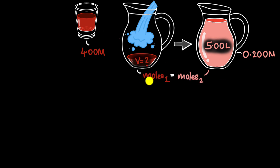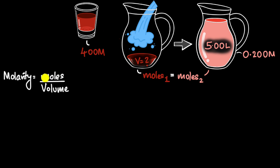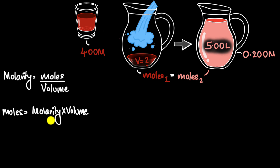The moles of sugar in the concentrated solution must equal the moles of sugar in the dilute solution, because adding water doesn't change that amount. Now, molarity is moles per volume, so rearranging gives moles equals molarity times volume. So I can plug in molarity times volume for the concentrated solution and molarity times volume for the dilute solution, equate them, and figure out what V is.